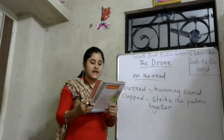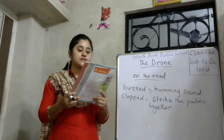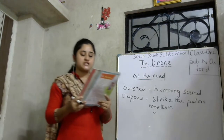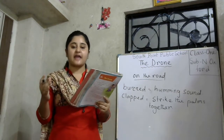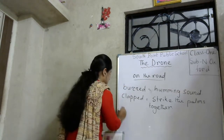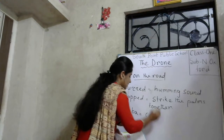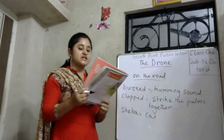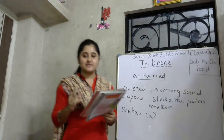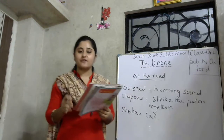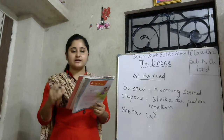Bikram said, 'I can see Siba on a branch.' Siba is the name of the cat in this story. Siba is on the branch of a tree and she can't come down.